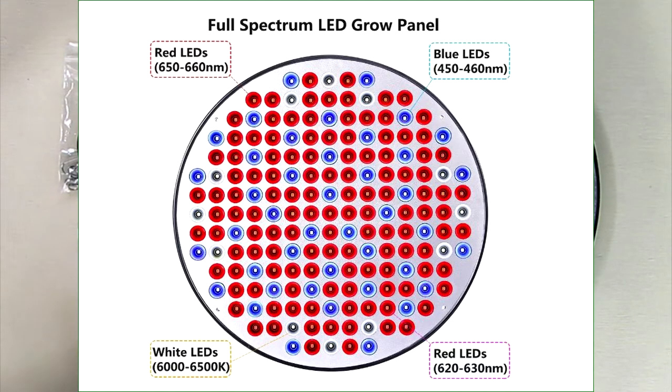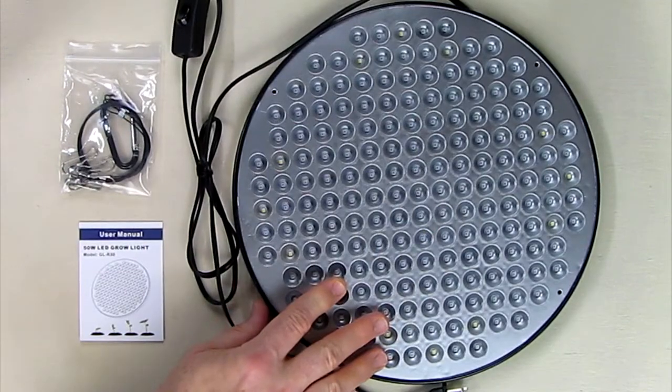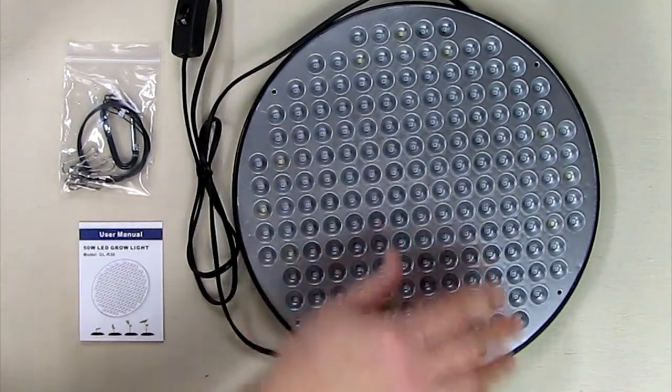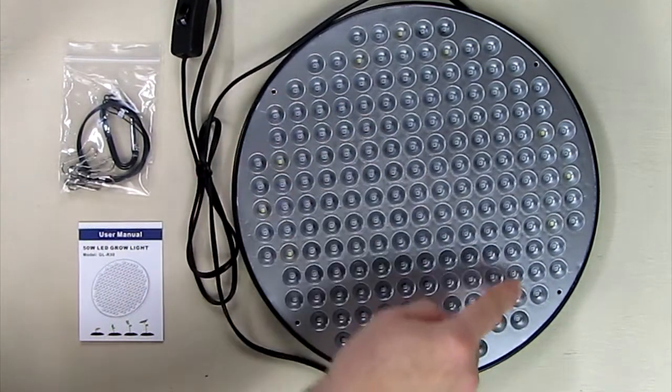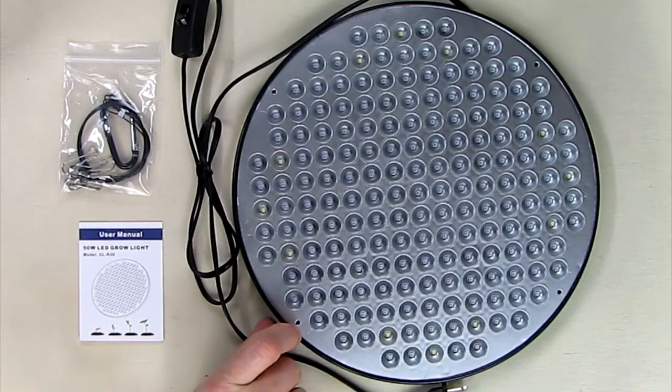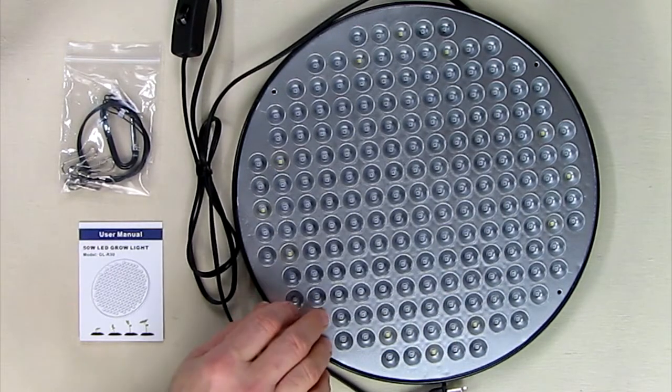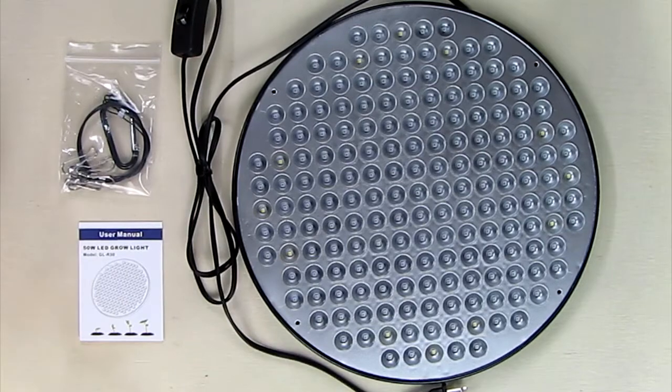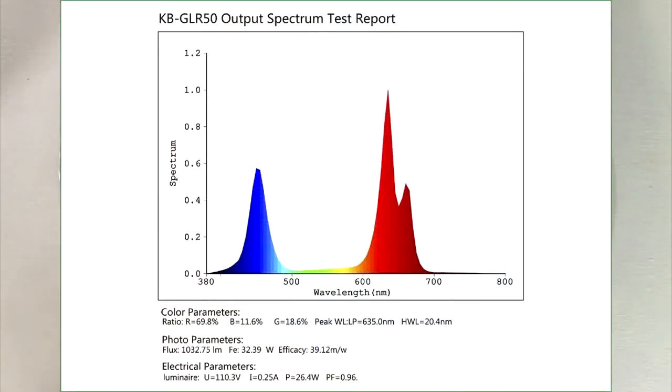They have a 50,000-hour lifespan. The unit weighs about one and a half pounds, very light, and it's about 11.8 inches diameter by 0.59 inches deep. This produces a light pattern that's for growing plants; it's acceptable for one and a half feet by one and a half feet growing area.